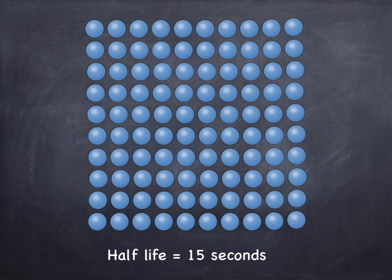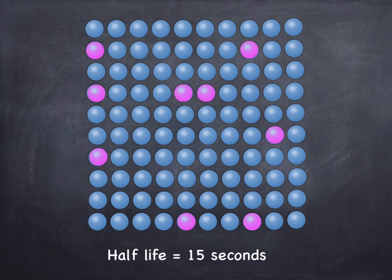Although individual atoms behave randomly, if you put enough together then a clear pattern becomes obvious. After a certain amount of time, half of the atoms in any sample will have decayed. We call this period of time the half-life.